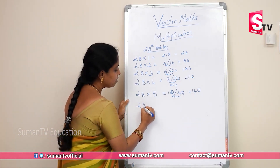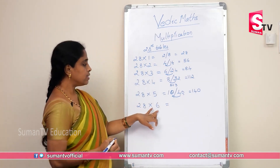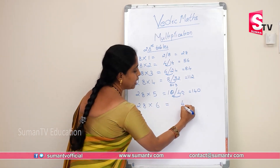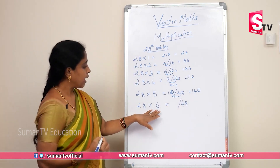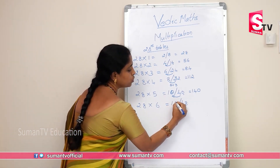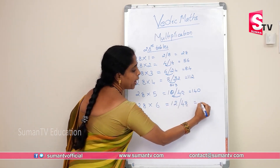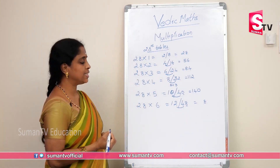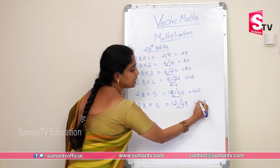28 into 6. 6×8 = 48. 6×2 = 12. In units place, write 8. Then 4 plus 2 = 6. So the result is 168.